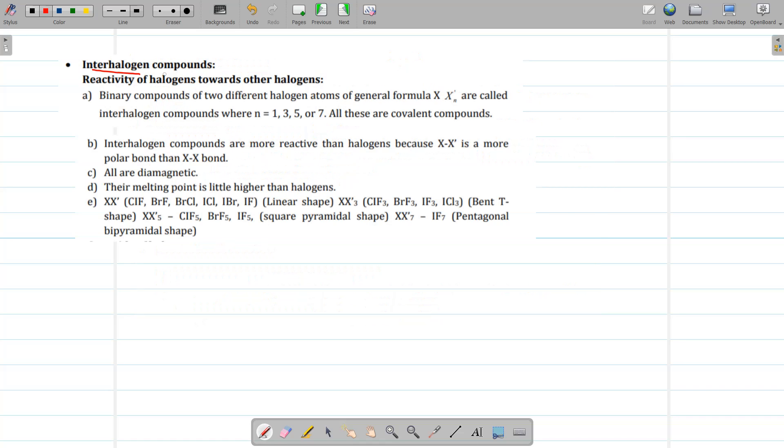Now, next are the interhalogen compounds. These are the binary compounds of two different halogen atoms having general formula XX' N. They are called as interhalogen compounds where N is 1, 3, 5, or 7 because they can show oxidation state of plus 1, plus 3, plus 5, and plus 7. And all these are covalent compounds.